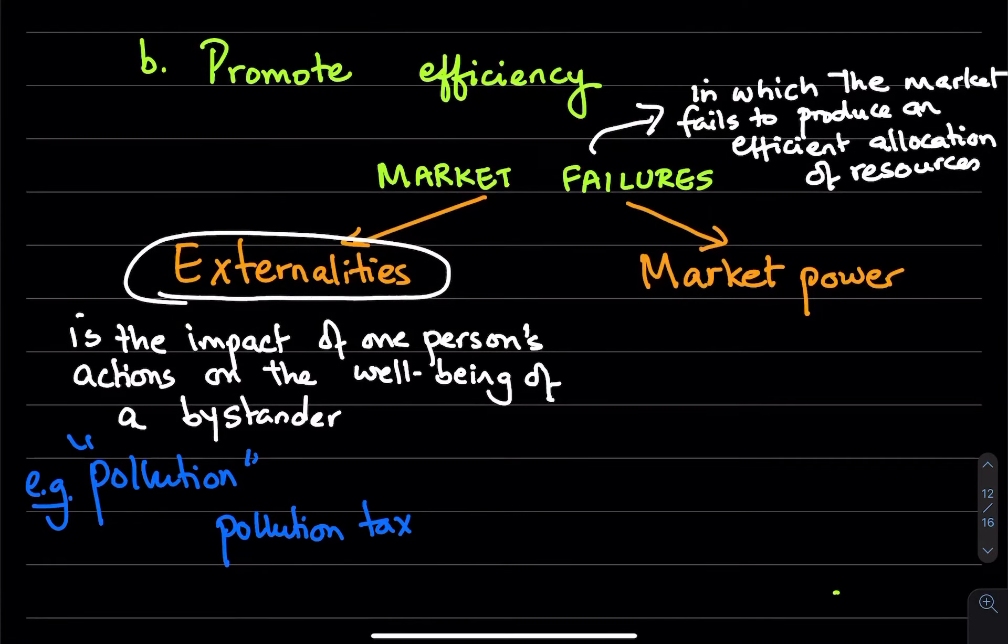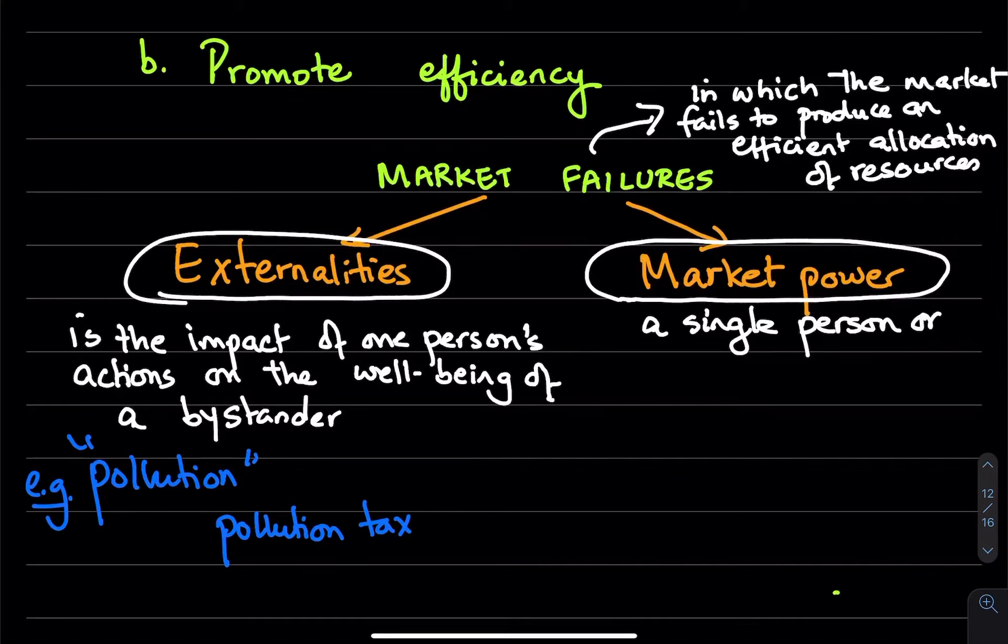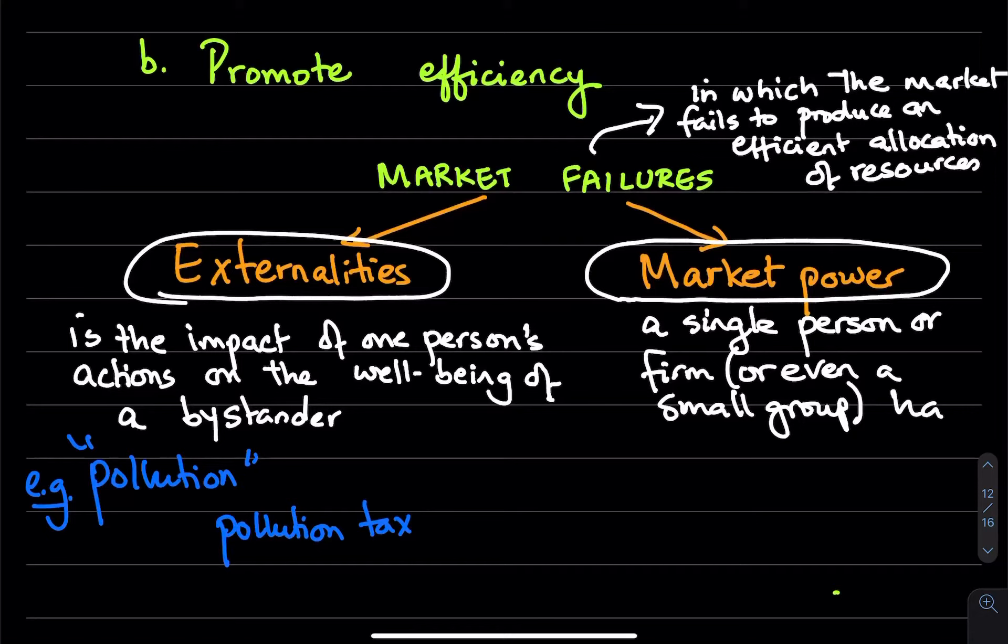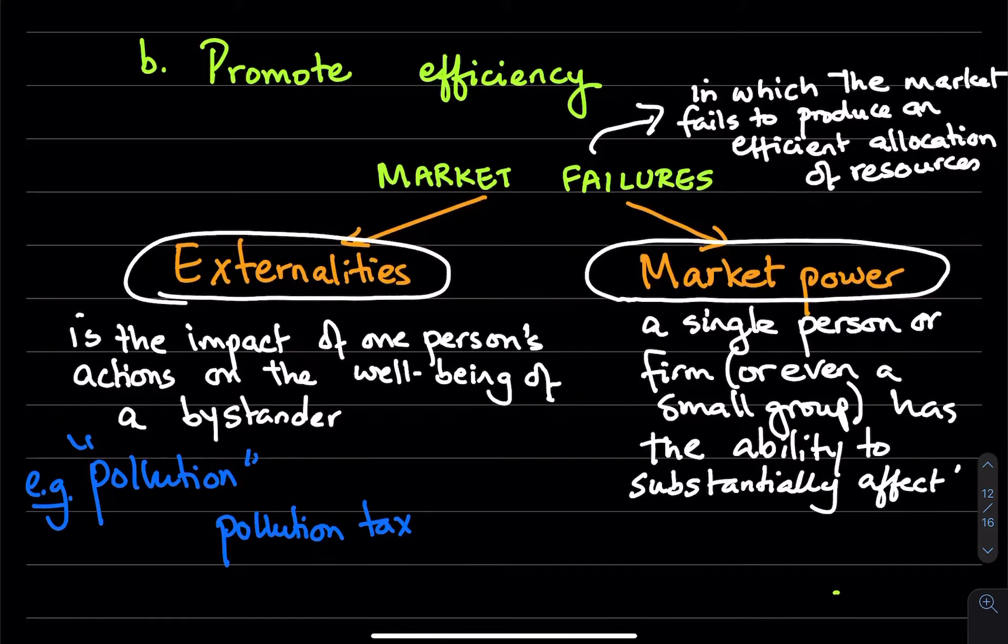Another type of or potential cause of market failure is having companies having substantial market power, which refers to the ability if a single person or firm or even a small group has the ability to substantially affect or influence market prices.